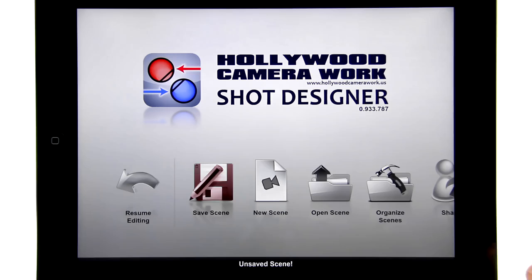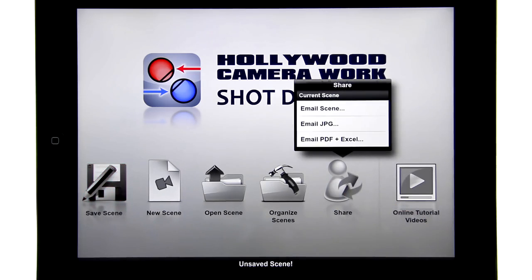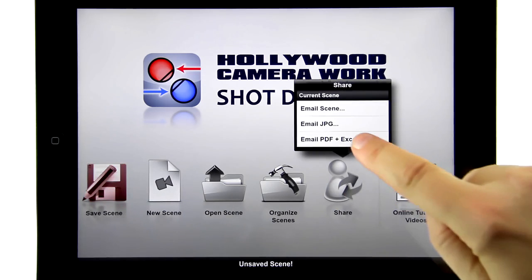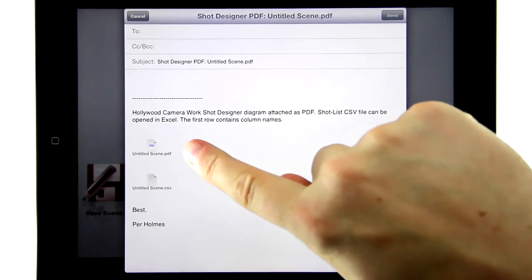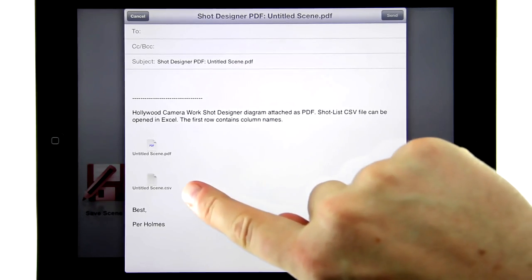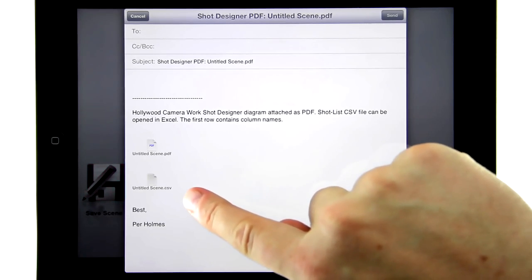So for output we'll go back to the main screen and then we're going to go to the share menu right here, and then we're going to select 'email PDF and Excel'. That creates a PDF with the diagram and the shot list, and also the shot list is a CSV Excel file that you can open in a spreadsheet.